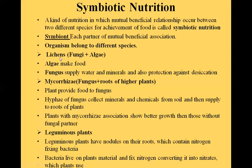An example of a symbiotic mutualistic association is lichen, which we have read about in chapter number 8. Lichen association involves fungi and algae living together.